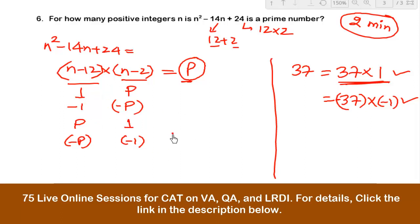So you have to check for these four cases. Let us check the first case. In this case, we can say that n - 12 has to be equal to 1. Therein, you will be getting the value of n is equal to 13.